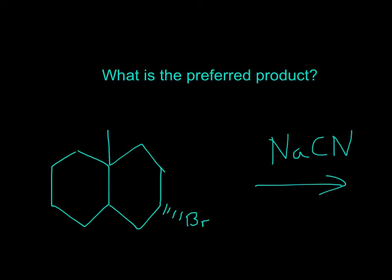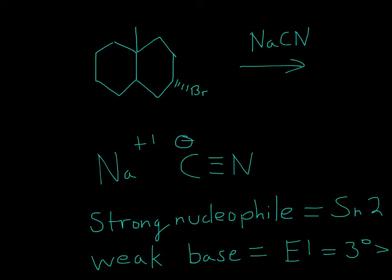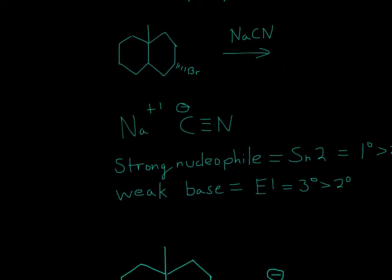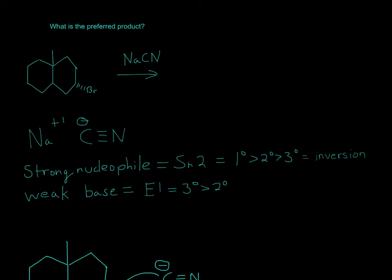So for this problem, try it first, and then I'll explain it. CN- is a really good nucleophile, so it's a strong nucleophile. A strong nucleophile is SN2, and it will be inversion, and then for weak base it's just E1.